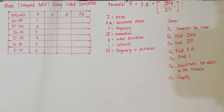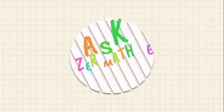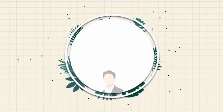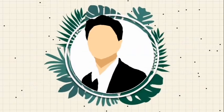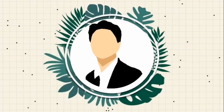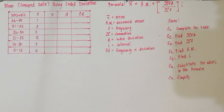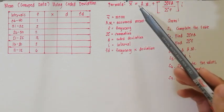Now let's proceed to the second method in solving the mean of grouped data, which is the use of the coded deviation. When you are using this second method, you're going to use this formula.